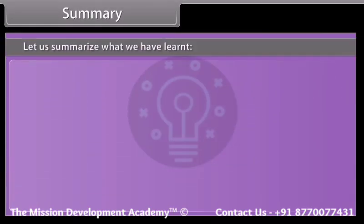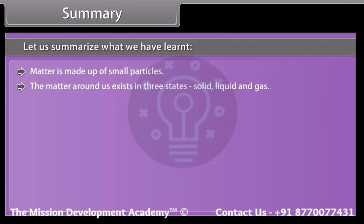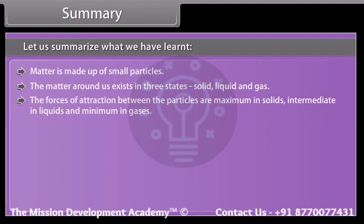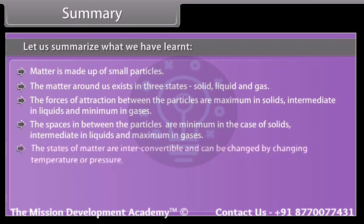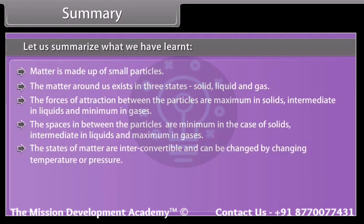Matter is made up of small particles. The matter around us exists in three states: solid, liquid, and gas. The forces of attraction between the particles are maximum in solids, intermediate in liquids, and minimum in gases. The spaces between the particles are minimum in solids, intermediate in liquids, and maximum in gases. The states of matter are interconvertible and can be changed by changing temperature and pressure.